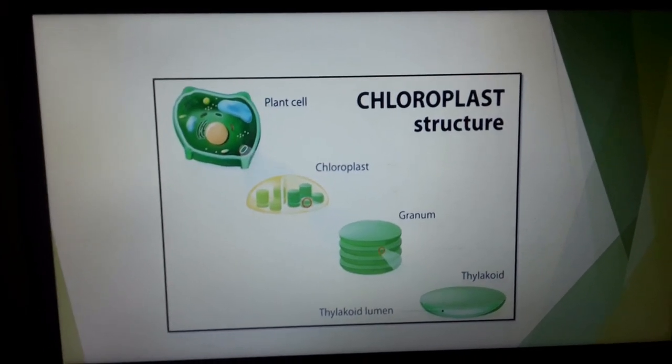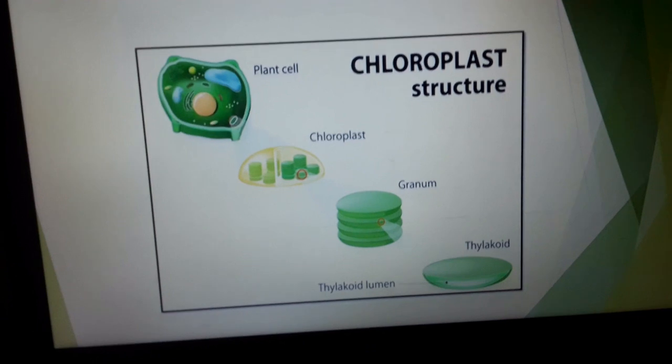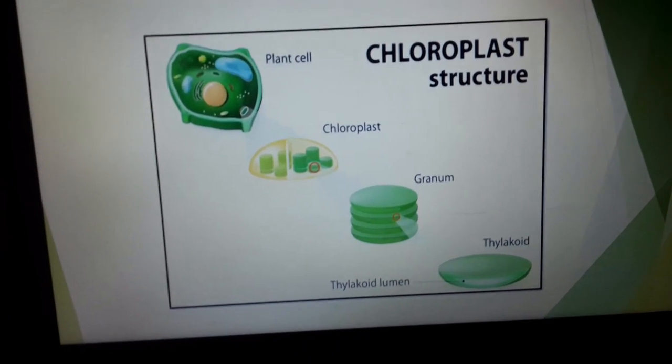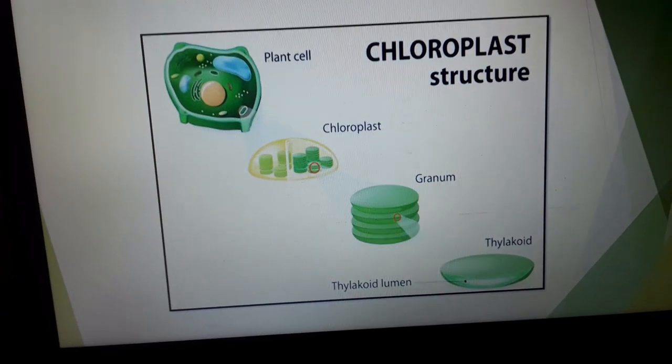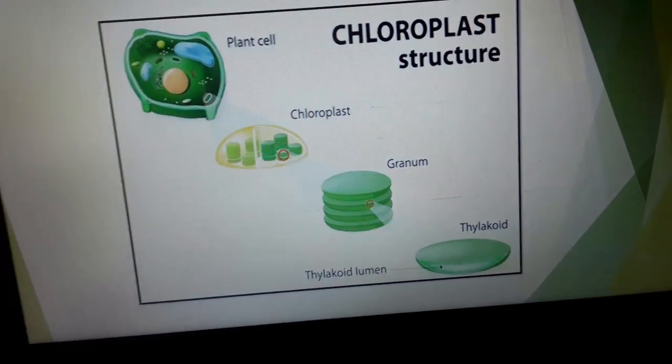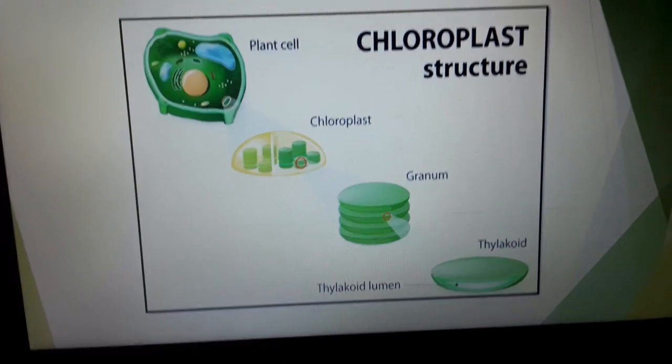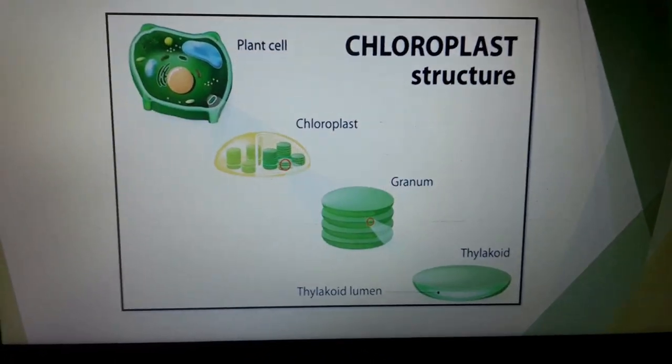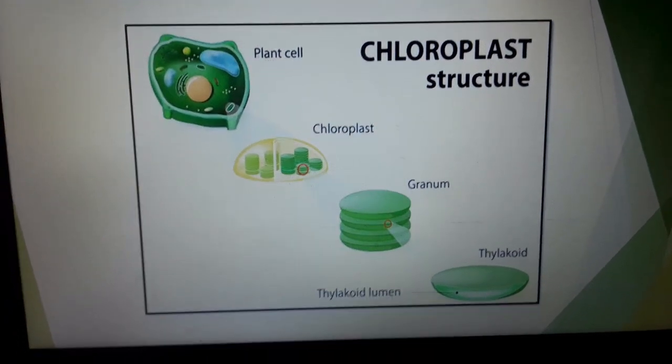Closer view. Plant cell, then chloroplast. Within the chloroplast membrane bound structure, the yellowish part is the stroma, green colored structure. Next, third one, granum. Within the granum, each and every layer disc-like structure is thylakoid. Within the thylakoid, we are getting the chlorophyll.